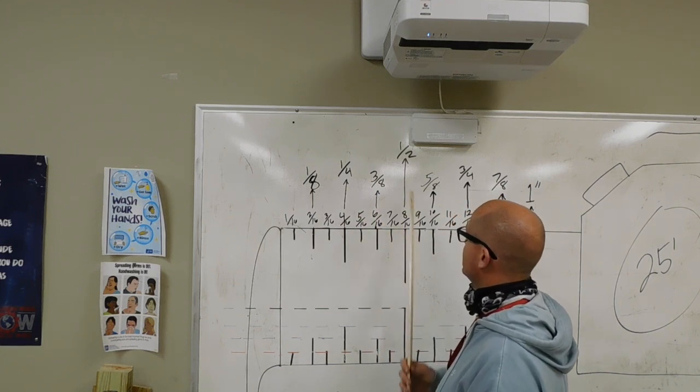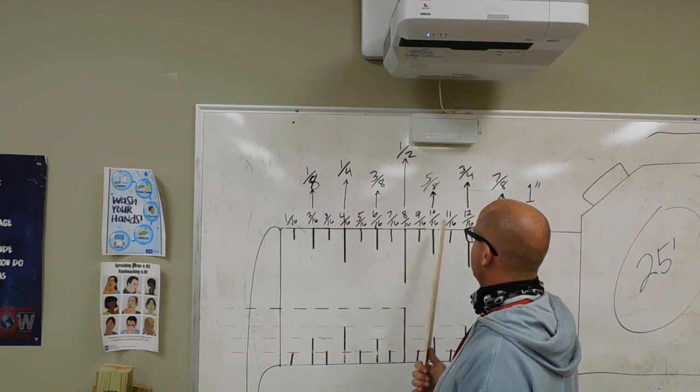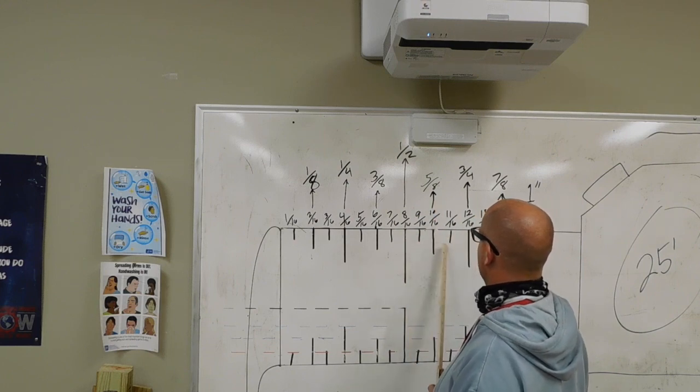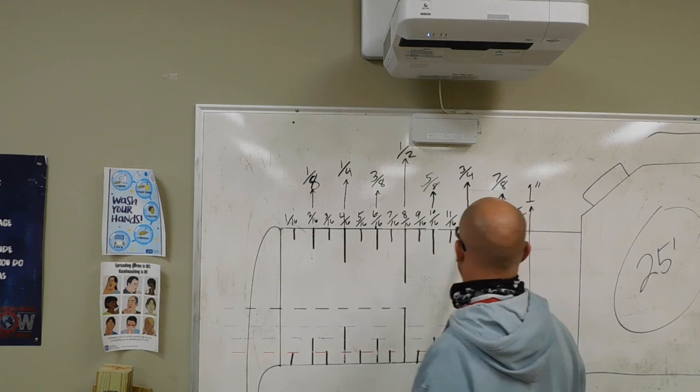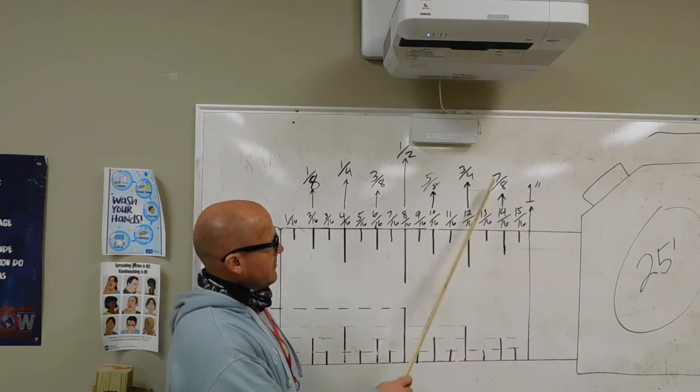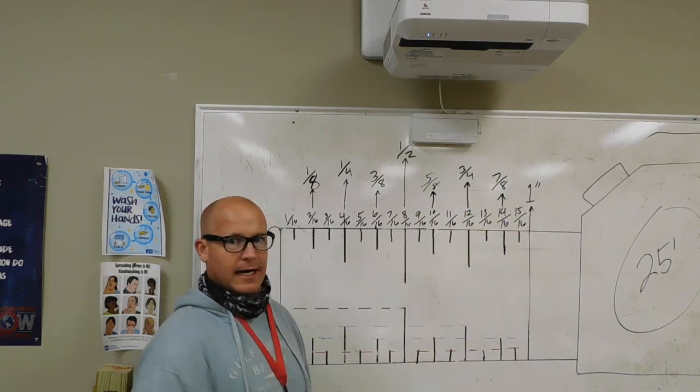7 sixteenths not reduced, 8 sixteenths is 1 half, 9 sixteenths, 10 sixteenths is 5 eighths, 11 sixteenths, 12 sixteenths is 3 fourths, 13 sixteenths, 14 sixteenths, 7 eighths, 15 sixteenths, and that's what we got.